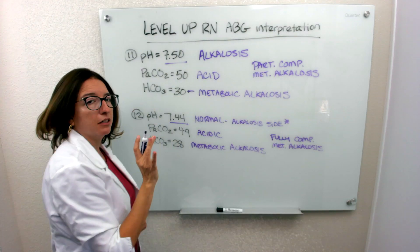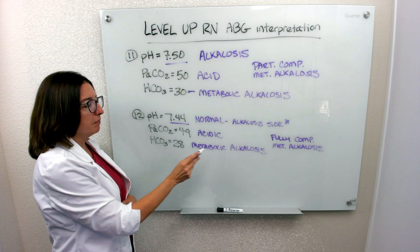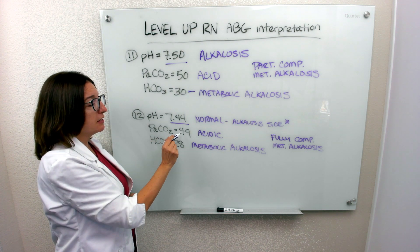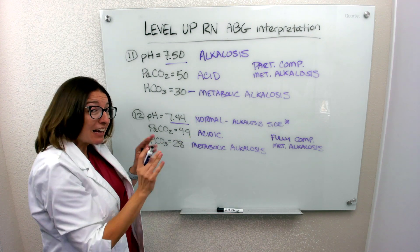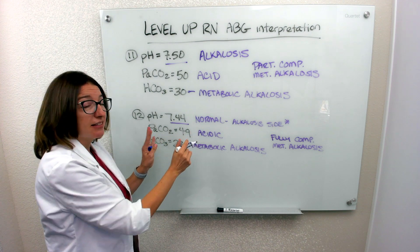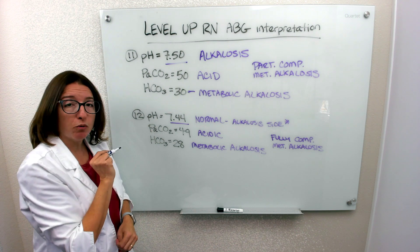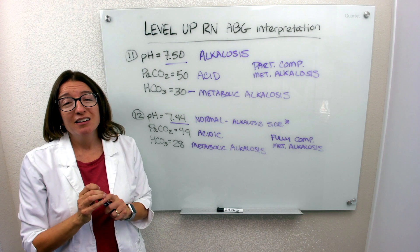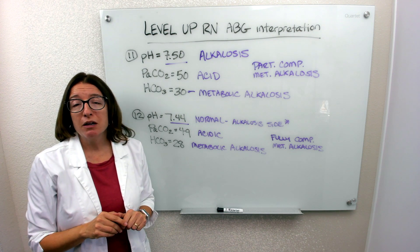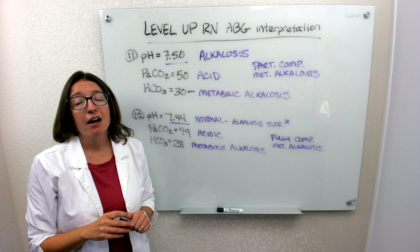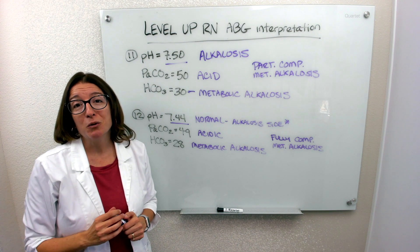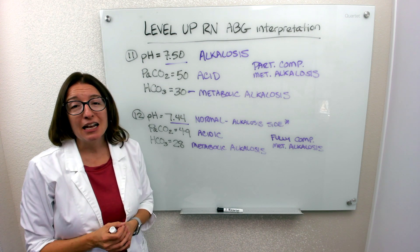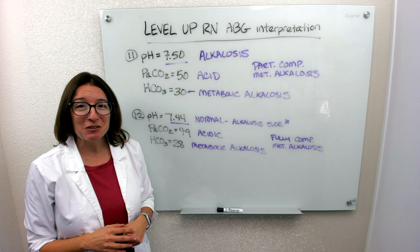Just to reiterate: the metabolic system is acting up and causing the alkalosis, but the respiratory system has become more acidic to help compensate, and it has done such a good job that the pH is in normal range — full compensation. Those are all 12 problems, covering a lot of the different variations you may run into on your test and as a nurse. Hopefully that's helpful — please leave comments and let me know if there's any additional help you need.